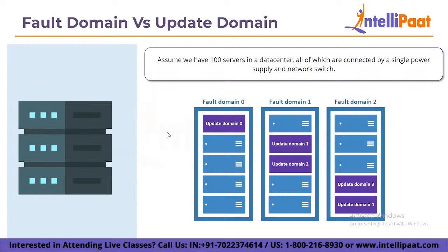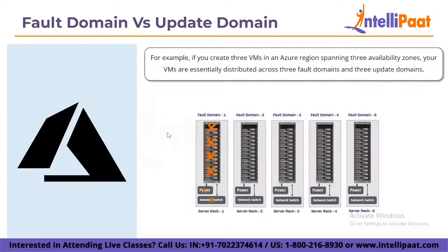An Azure availability zone is a distinct physical location within an Azure region. Each availability zone consists of one or more data centers that have their own power, cooling, and networking. Not all regions have availability zones, but regions that do have at least three distinct zones. Consider each availability zone to be its own fault domain and update domain. So if you have three availability zones in an Azure region, you have three fault domains and three update domains.